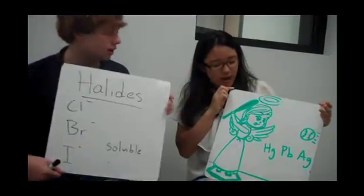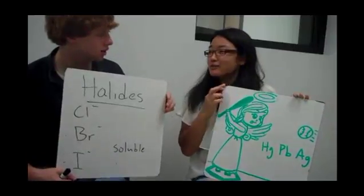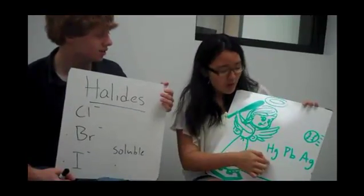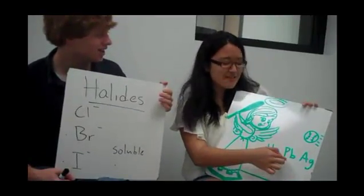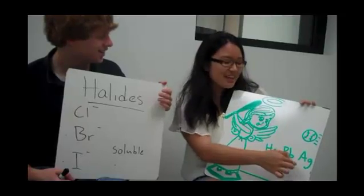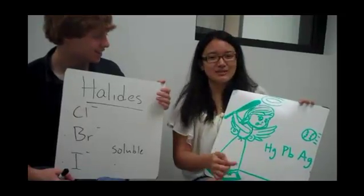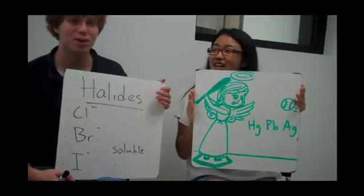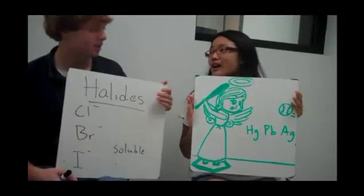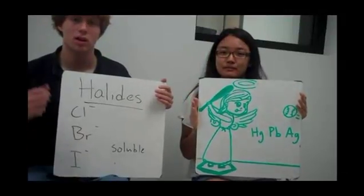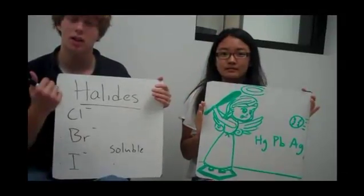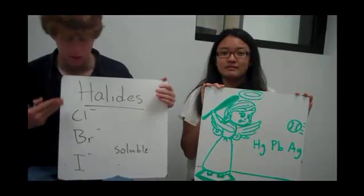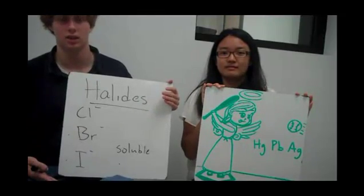So what is this you drew here? I've created a mnemonic device: 'holy girls play baseball angelically and graciously.' Look at this picture. That was perfect — you'll remember it so well. Remember, mercury, lead, and silver are going to form solids when paired with any of the halogens.